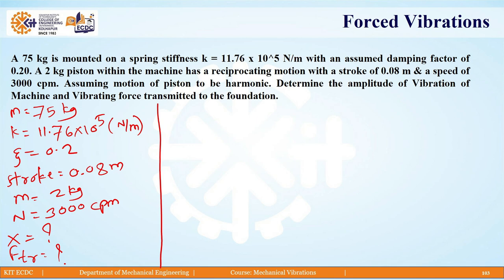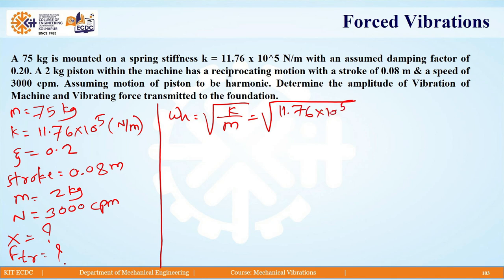For this we require various terms. First, we calculate omega_n which is given by the square root of K by m. So K is 11.76 × 10⁵ divided by mass 75 kg. Doing the calculation, we get omega_n as 125 radians per second.